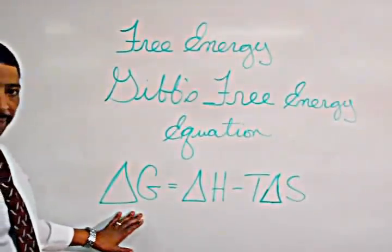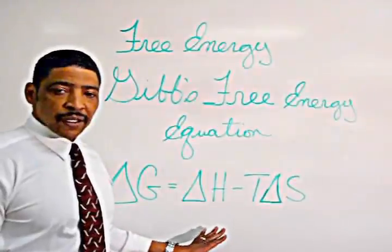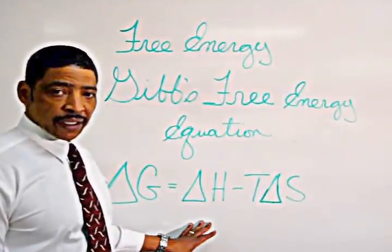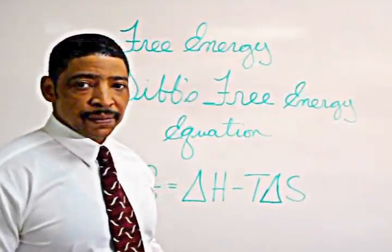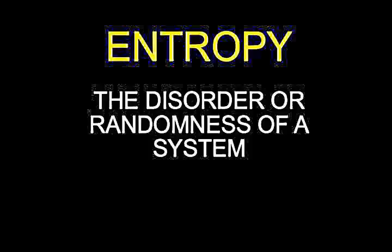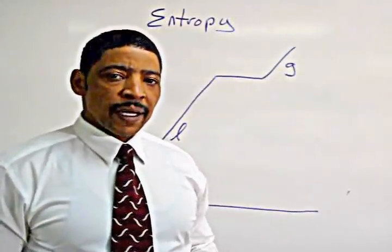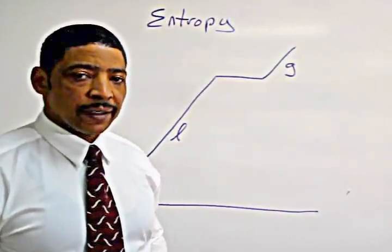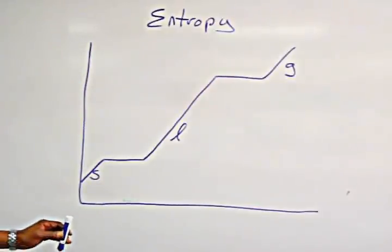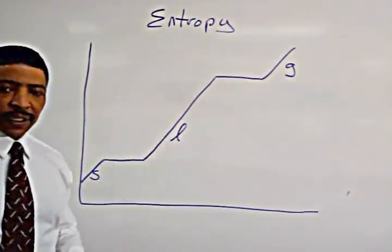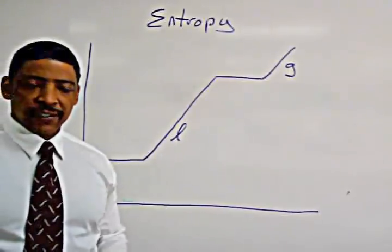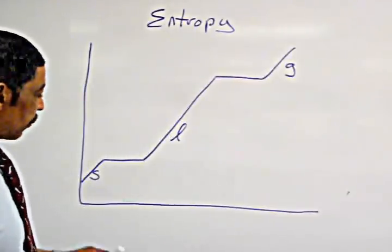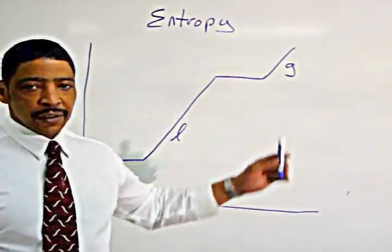Free Energy is equal to the delta H, or enthalpy change of a reaction, minus the entropy change times temperature. A simple way to explain what entropy really is, is by comparing the various states of a substance on a heating curve. The entropy or disorder in a system increases from solid to liquid to gas.